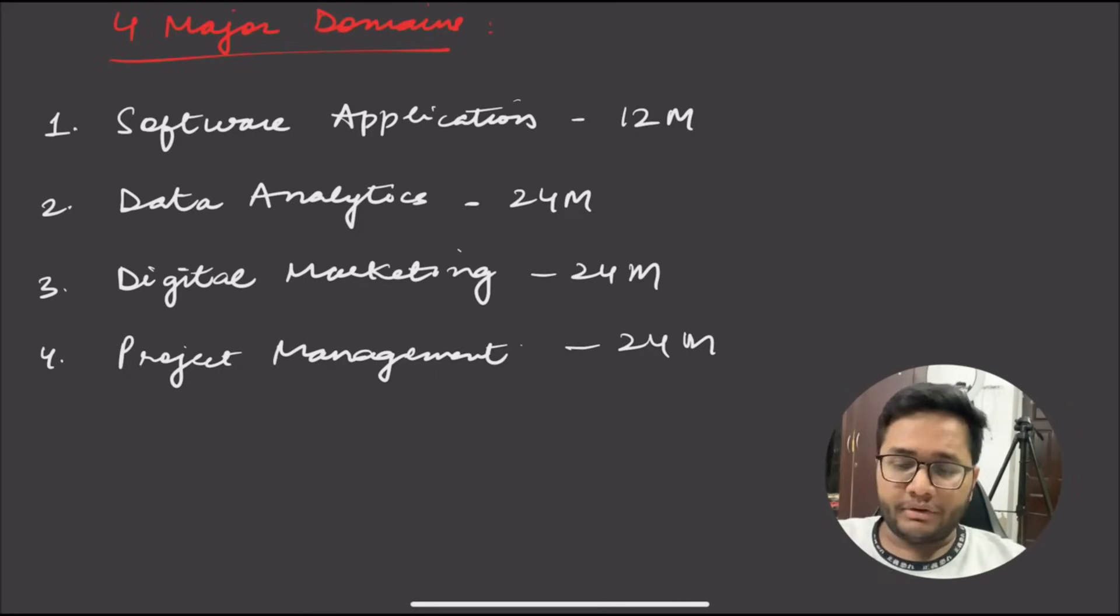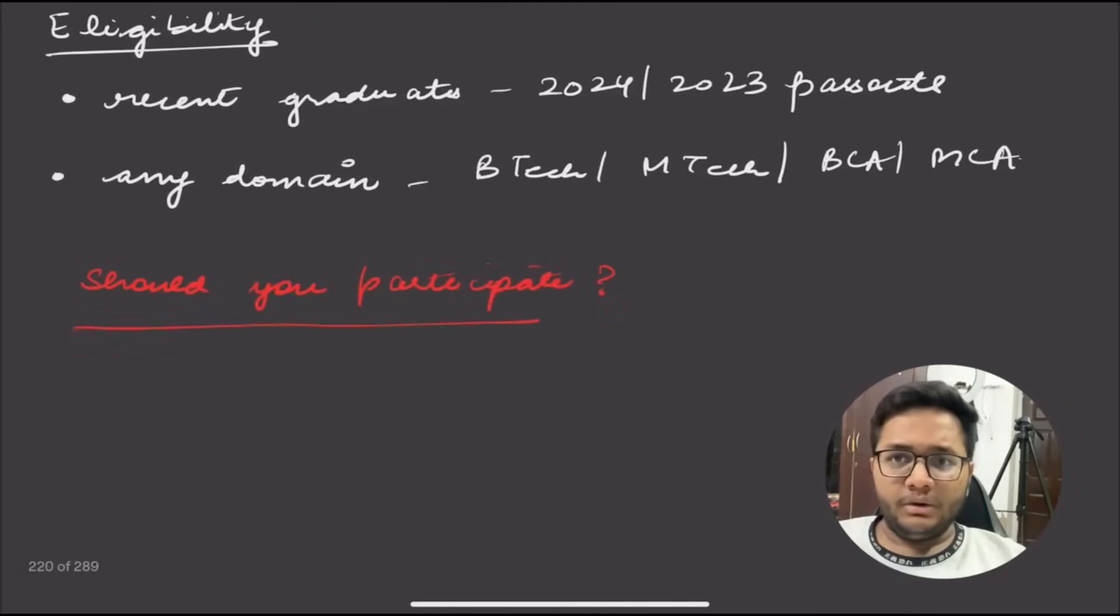Eligibility: Who is eligible for this? All recent graduates - if you graduated in 2024 or 2023, you're eligible. You can be from any domain: B.Tech, M.Tech, MSc, BSc, BCA, B.Com, MCA - any domain from anywhere. If you want to start your career with Google, this is a great opportunity because they don't have any specific eligibility criteria.